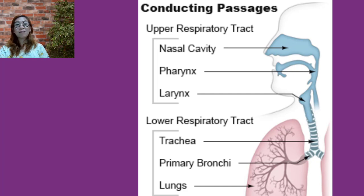Other regions may have cilia to propel mucus. There are four components of the conducting passages: first, the nose and the nasal cavities; second, the pharynx; third, the larynx; and fourth, the bronchi, bronchial tree, and lungs. I'll be discussing them all in the next few slides.